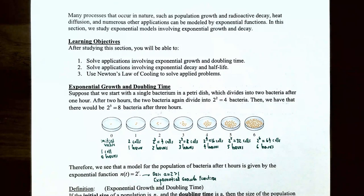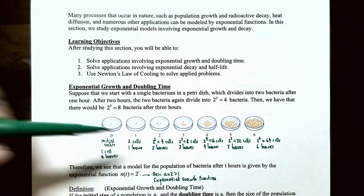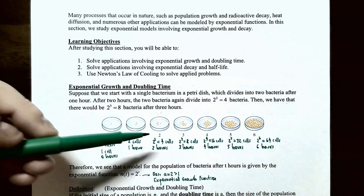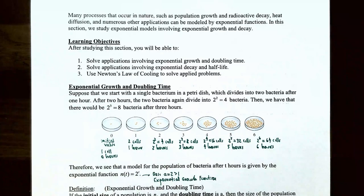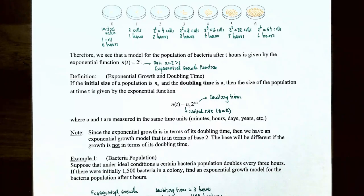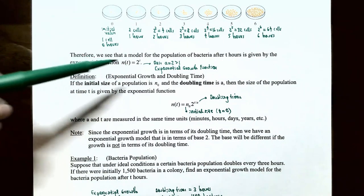Suppose that we start with a single bacterium in a petri dish which divides into two bacteria after one hour. After two hours, those two bacteria divide into four, and there would be two cubed or eight bacteria after three hours. At zero hours you have the initial value of one bacterium; after one hour, two cells; after two hours, four cells; after three hours, eight cells. The amount doubles every hour, so after four hours you have 16, five hours 32, and six hours 64 cells. The function modeling population after t hours is n(t) = 2^t, an exponential growth function since the base 2 is greater than 1.